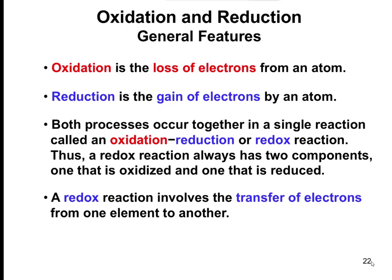Oxidation is losing electrons from an atom, and reduction is the gaining of electrons. So one component is going to lose electrons, and the other component is going to gain electrons — oxidation and reduction occur simultaneously within the reaction. A redox reaction always has two components: one that's oxidized and one that's going to be reduced.